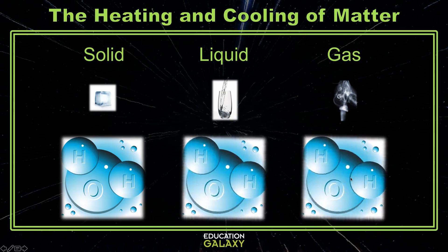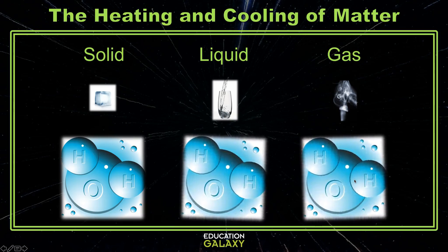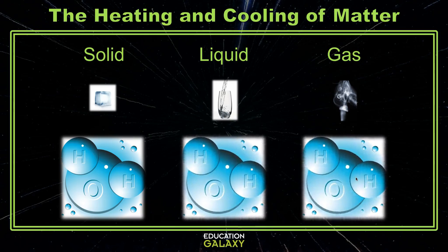When the temperature of water warms up and rises to 100 degrees Celsius or higher, then the water molecules begin to vibrate even more, and will start bouncing around all over the place. This is the gas state. Because the molecules can bounce around away from each other, they will spread out into any available space.